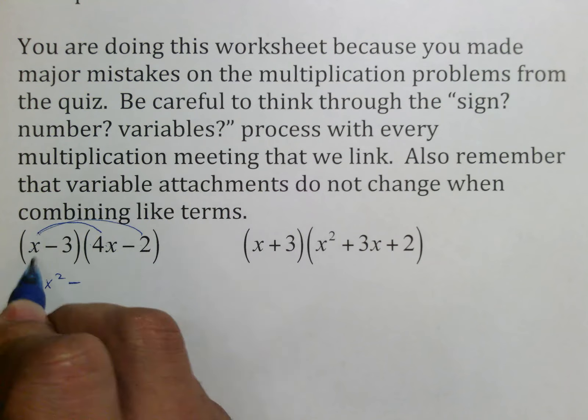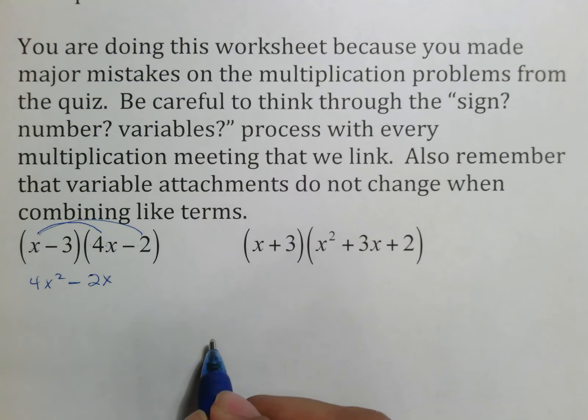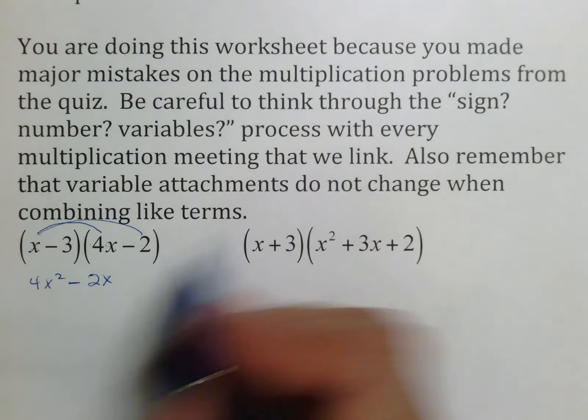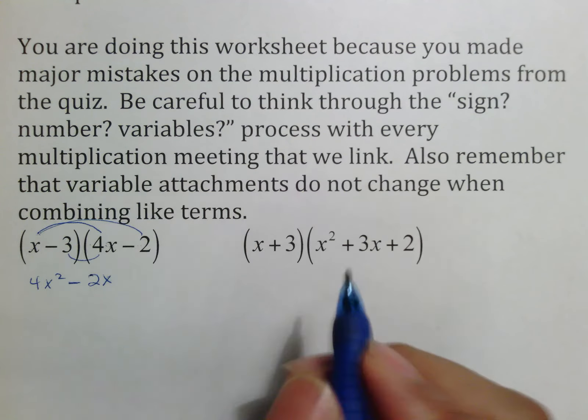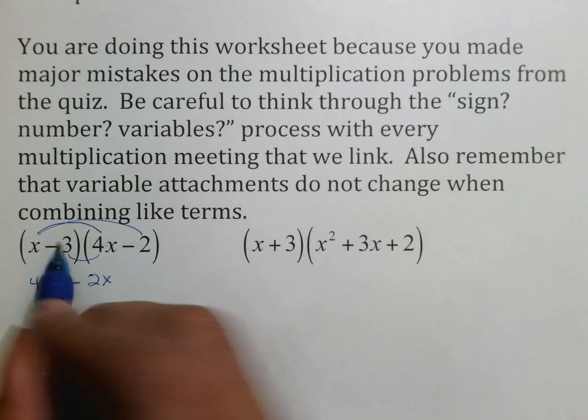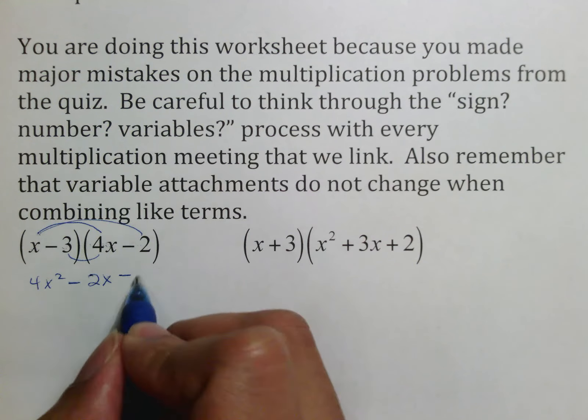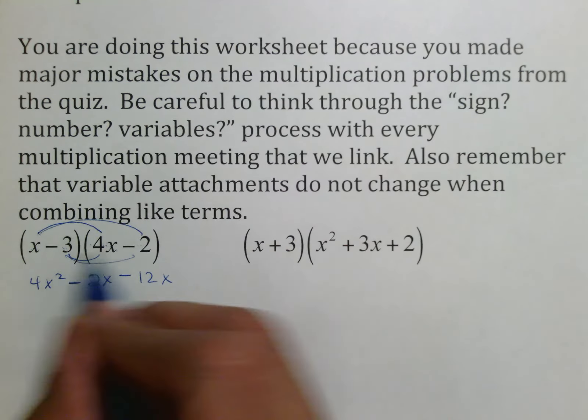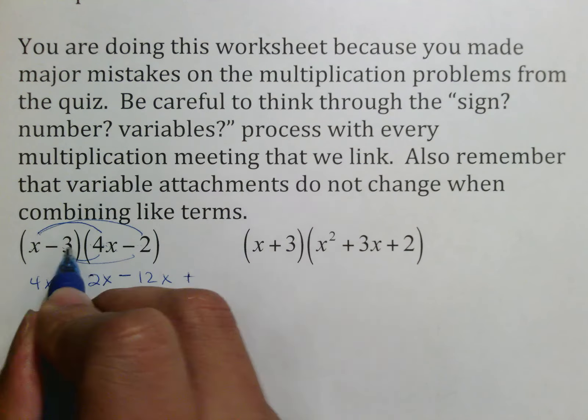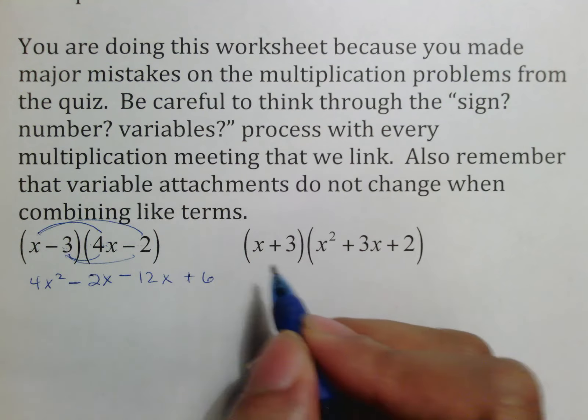When I do this, a positive times a negative is negative. The only number here is two. And there's only one x among those two. If you just follow that sign, number, variables process, you will get it right. Here, the sign is negative. The number is 12. And there is only one variable among those two. And then the last thing, sign here, negative times a negative is positive. The number is six. And there are no variables there.